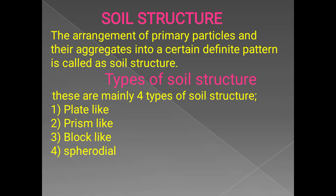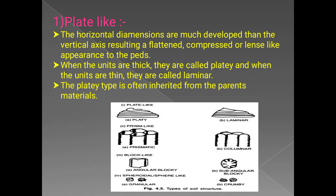The first type is the plate-like structure. In this case, the horizontal dimensions are much more developed than the vertical axis, resulting in a flattened, compressed, or lens-like appearance. As seen in the figure, plates are arranged one on top of another, giving an appearance similar to stacked plates — this is called plate-like structure.